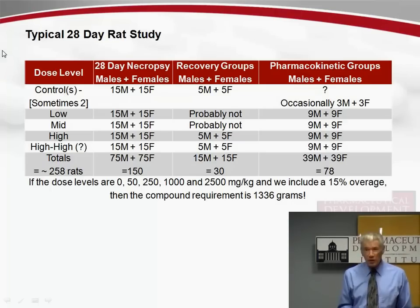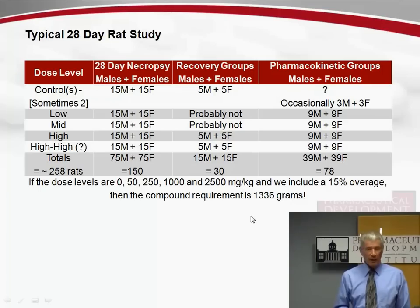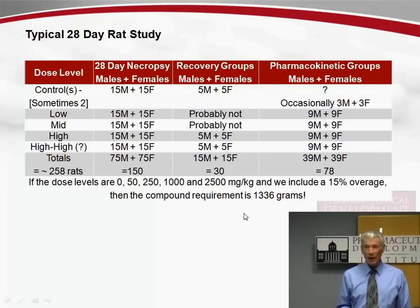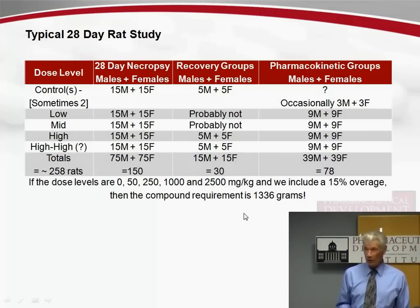I'm always at the mercy of my chemistry manufacturing and control colleagues when I do a study like this. If I've selected dose levels of 50, 250, 1,000, and 2,500 milligrams per kilogram and include a 15% overage for spillage, this study requires 1.3 kilos of material. And remember, I'm performing this study very early on prior to filing the IND — so I feel for my chemistry colleagues who have to provide me with 1.5 kilos of material before we've even made the decision to go ahead and file the IND.